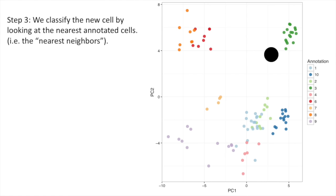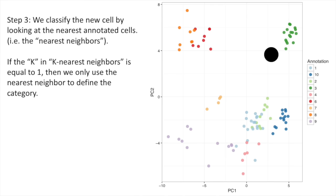Step 3. We classify the new cell by looking at the nearest annotated cells, i.e., the nearest neighbors. If the K in K-nearest neighbors is equal to 1, then we will only use the nearest neighbor to define the category. In this case, the category is green because the nearest neighbor is already known to be the green cell type.